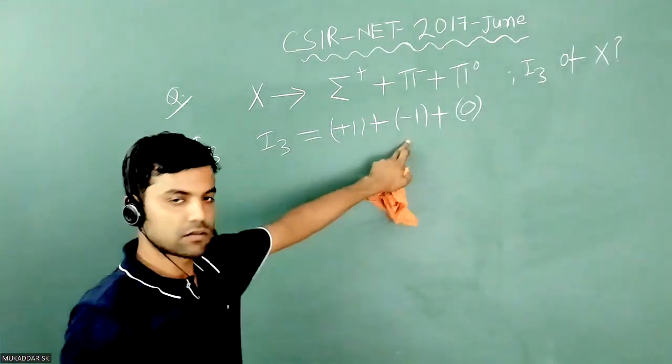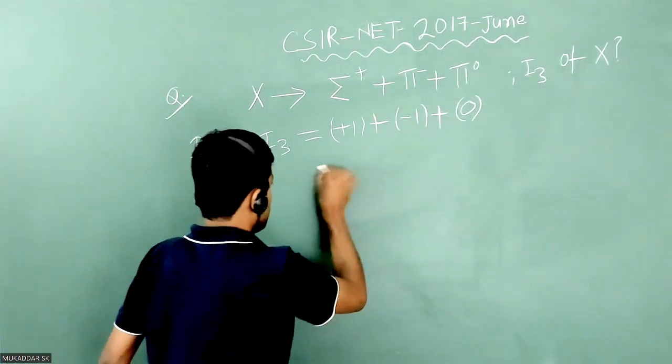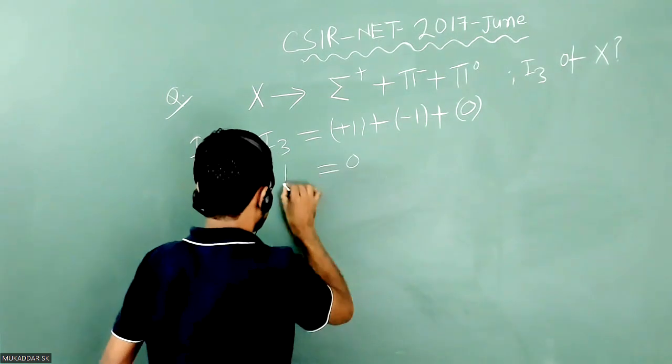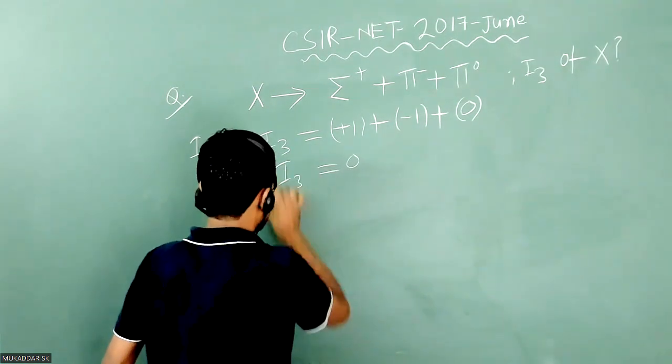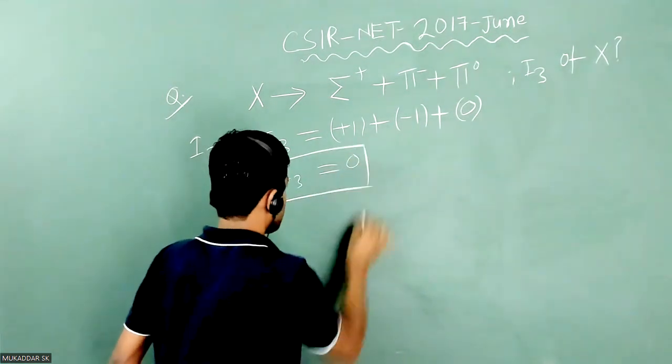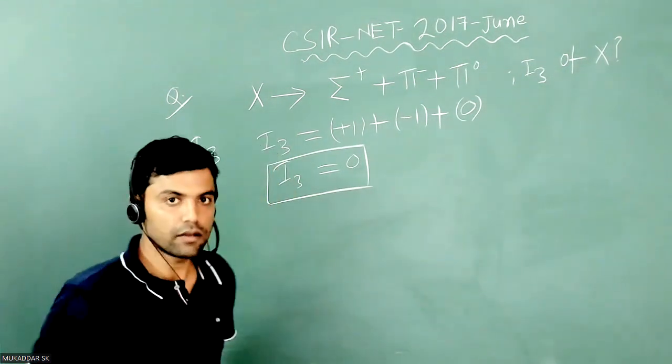So one plus minus one plus zero equals zero. It means the i3 of X particle is zero. Thank you.